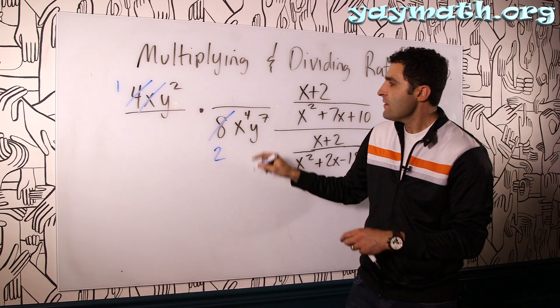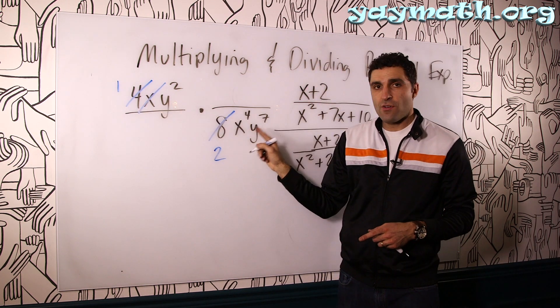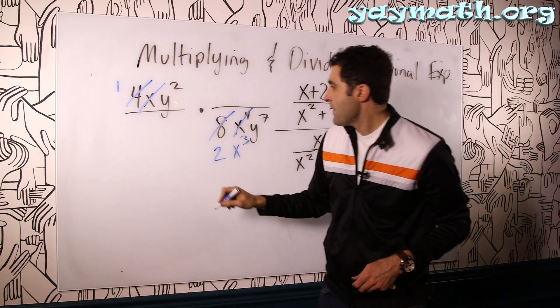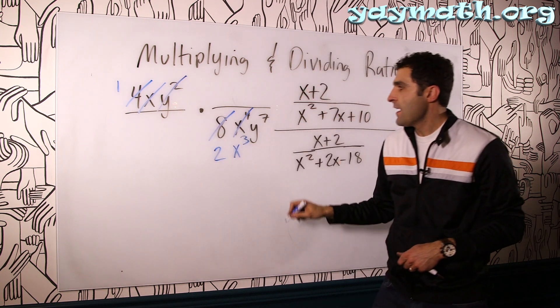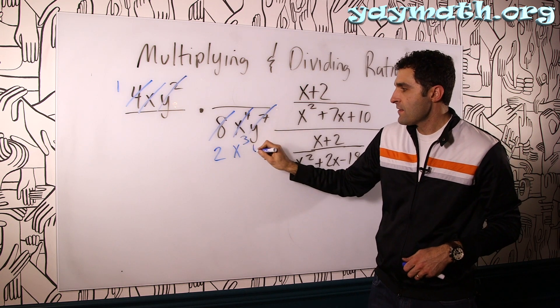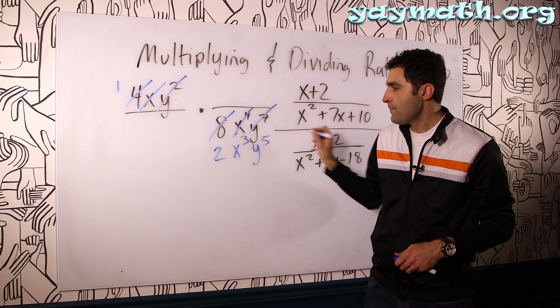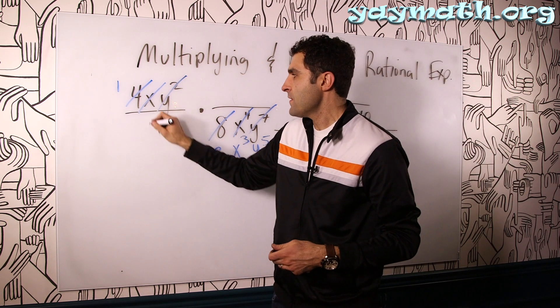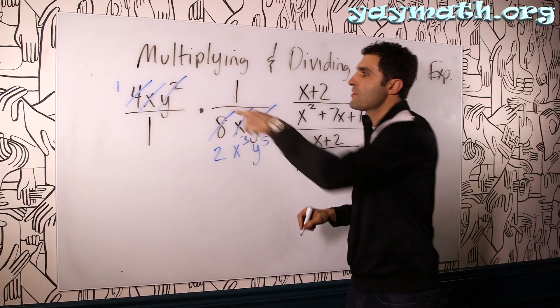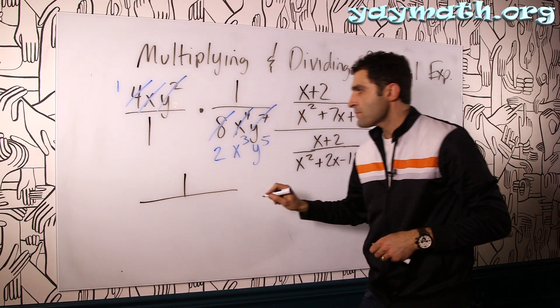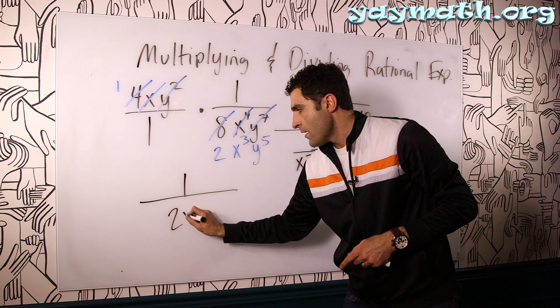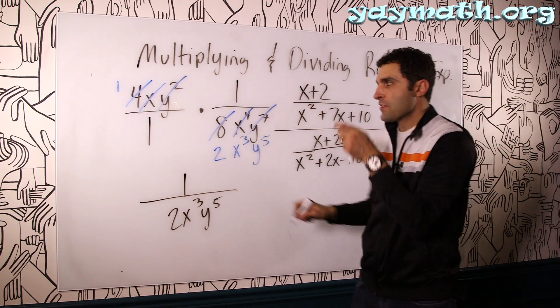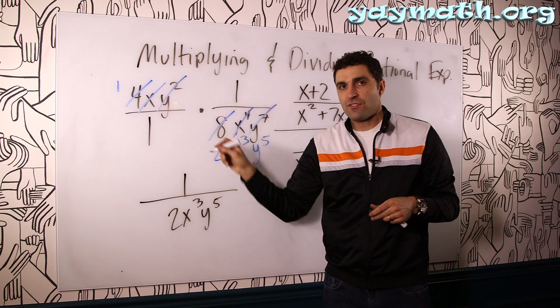4 goes into this once, this goes twice. Now X divides here. One of these X's cancels one of these X's, leaving three of them. And then two of these Y's cancel two of these Y's, leaving five of them. So the result of this fraction, multiply across, the top becomes one, the bottom becomes 2X cubed Y to the fifth. So I just want to introduce you to this cancellation process.